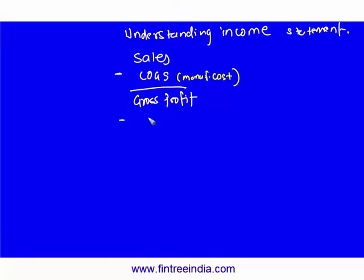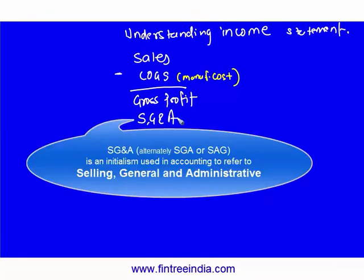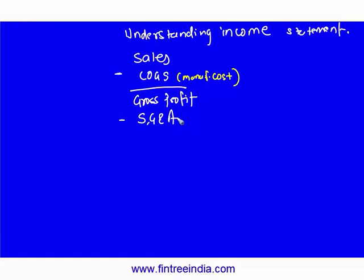From gross profit, the first number you would reduce would be SG&A — selling, general and administrative expenses. So all other business-related expenses of this organization you classify into SG&A. Salary paid to your employees would be a part of SG&A, marketing expenses, administrative, distribution — everything which is operating apart from COGS and depreciation is a part of SG&A.